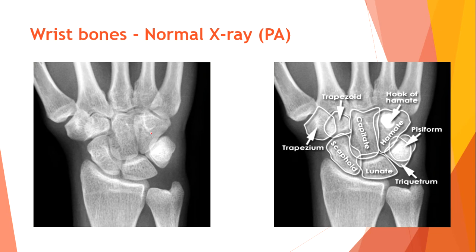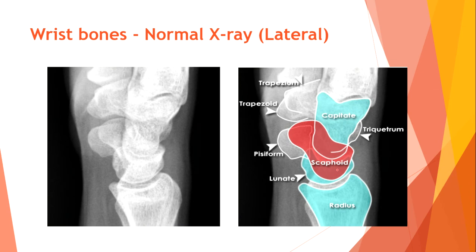Normal wrist bones on x-ray. Posterior-anterior view shows: trapezium, trapezoid, capitate, hamate, hook of hamate, pisiform, triquetrum, lunate, and scaphoid bone. Lateral view shows: trapezium, trapezoid, capitate, triquetrum, scaphoid, pisiform, lunate, and radius.